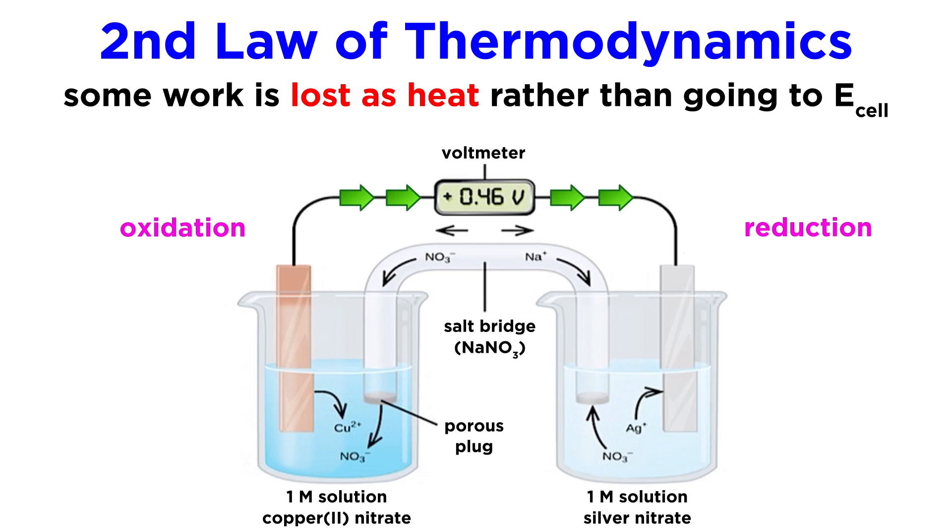As we know from learning about the second law of thermodynamics, some of the work produced by a galvanic cell will always be lost to the environment rather than going toward the cell potential. The wire that allows for current flow will produce heat, such that the maximum work possible is not physically attained.